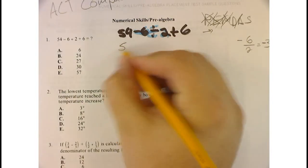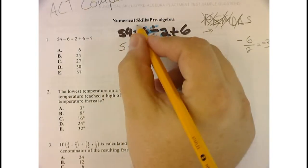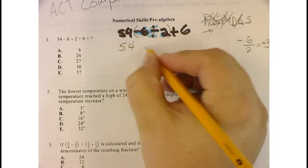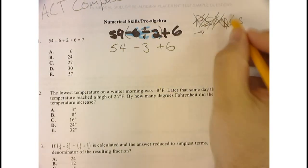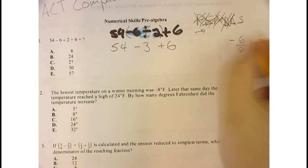So I have 54, right? Then all this stuff here becomes negative 3 plus 6. So now that's all the division. So the only thing I have left is adding and subtracting.